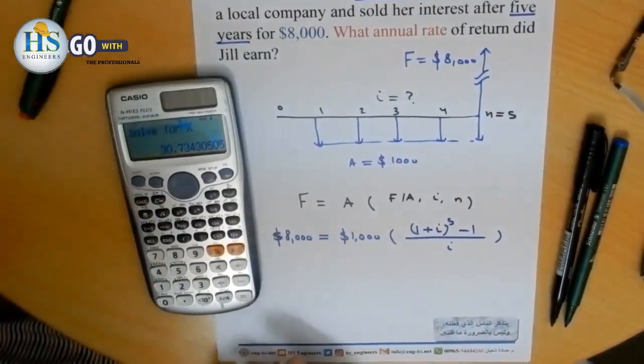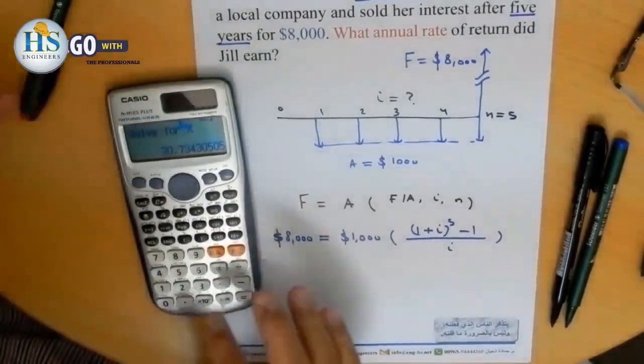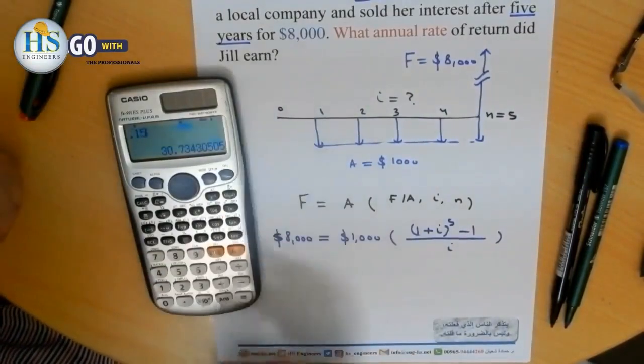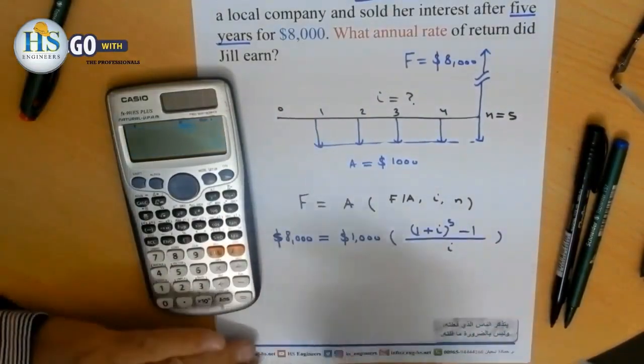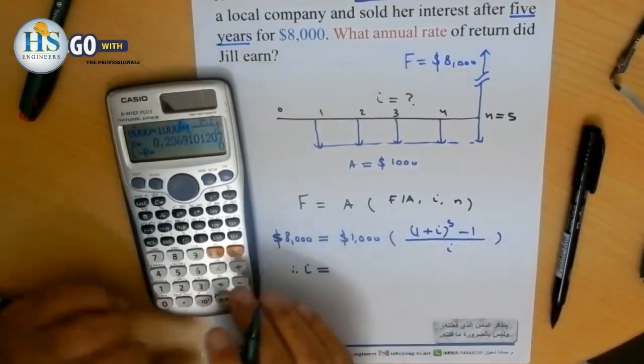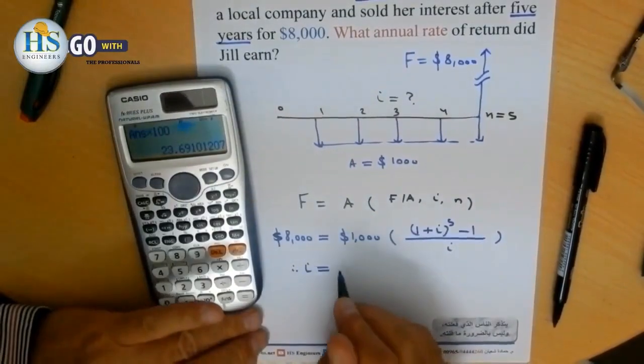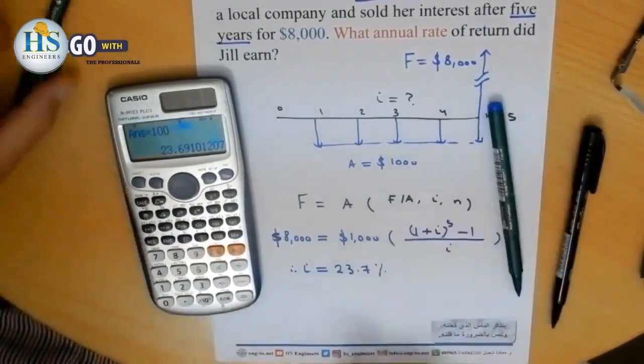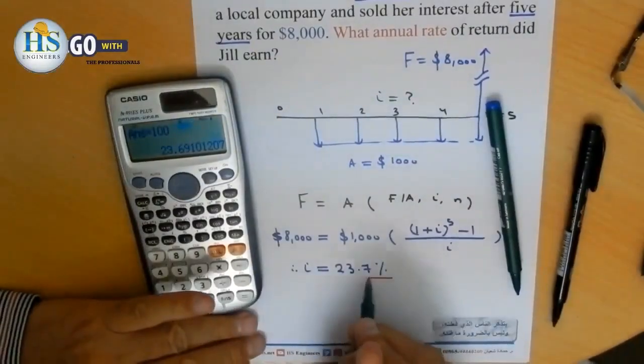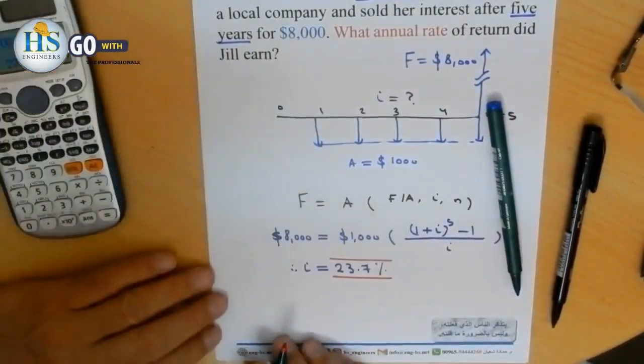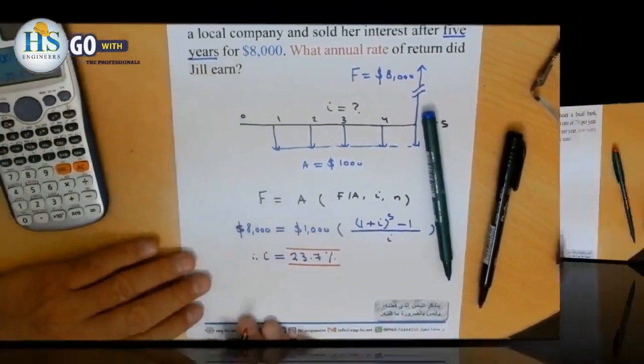And I write it gives about 30, meaning we want I so I comes out to about 15%, something like this to speed things up. So I times 100 gives 23.7%. This is the interest rate that Jill earned during the period she invested over the five payments.